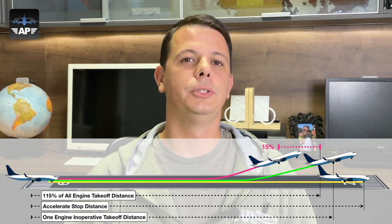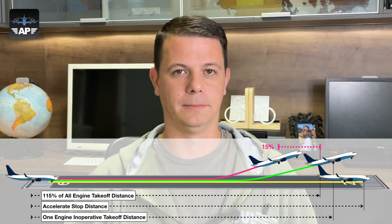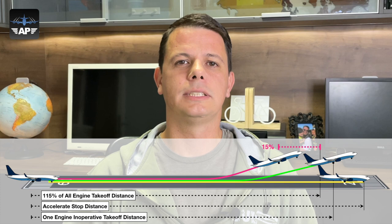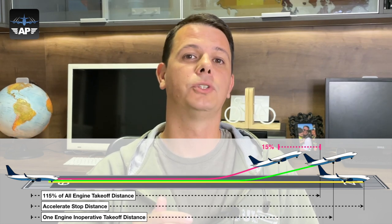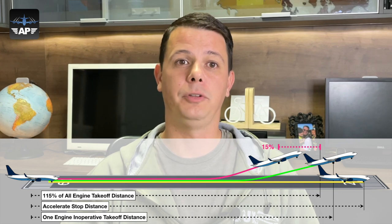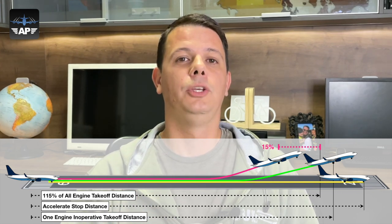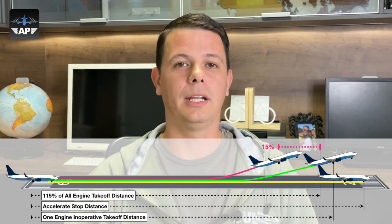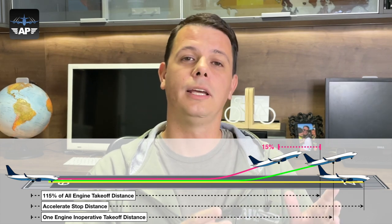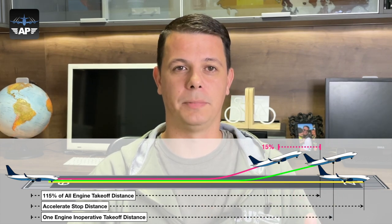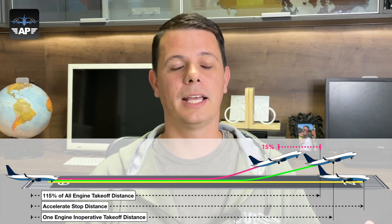The all-engine takeoff distance is not changed by V1 at all, but the other two are largely affected by V1. The accelerate and stop distance is straightforward: if you have a low V1, you can accelerate to that speed very quickly and also stop within a very short distance. If you have a higher V1, you need a longer runway to reach V1 and then a longer distance to stop. So low V1 means a short accelerate and stop distance, and a higher V1 means a longer accelerate and stop distance.